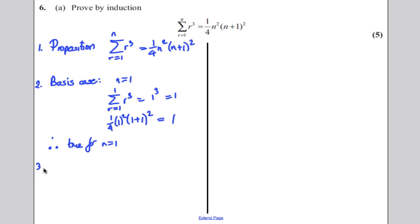Step 3: you do the assumption step. You assume that the proposition is true for N equals K. So write that: assume true for N equals K. And when you do that, you write down what that means. So you're saying, I'm assuming that the sum from R equals 1 to K this time, I'm letting N be K, of R cubed, must be a quarter K squared times K plus 1 squared.